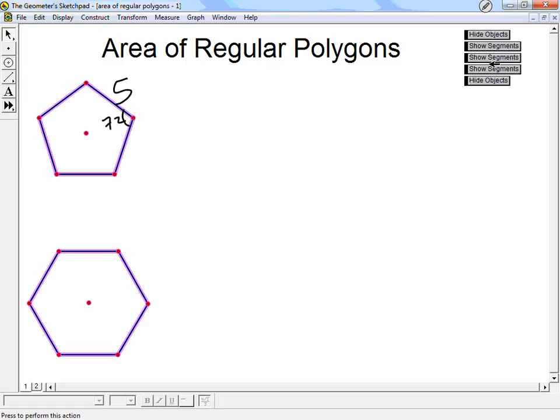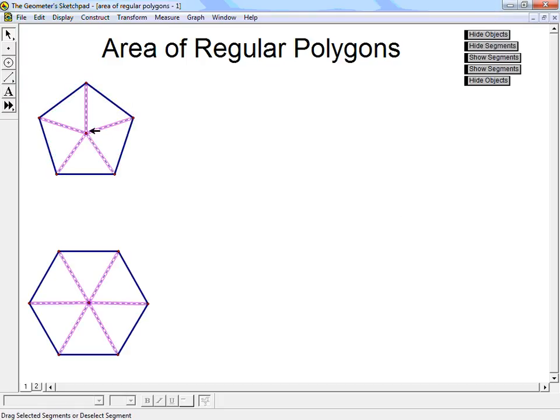Now on a regular polygon or any polygon, I can just construct, use a radius, or in this kind of plural we call it radii. I can just use radii that creates triangles. You notice my pentagon, I created 5 triangles. My hexagon, I created 6 triangles.